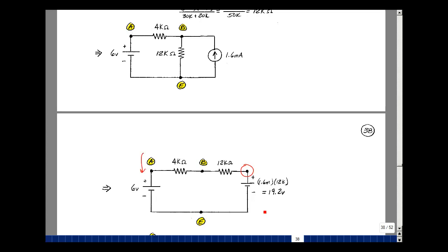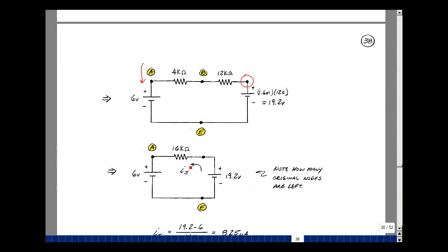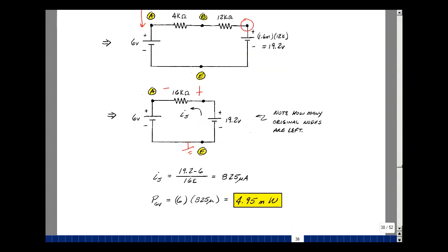I get 16k, and now I can solve for the current in this direction. That would be a drop across here in this direction. If I think of this as a common node or a ground, and this node voltage is 19.2. This is 6 volts, so I take the difference of those two and divide by 16k, and I get 825 microamps, the current flowing into this plus terminal. So the power absorbed by the 6-volt battery is the product of 6 volts and 825 microamps, and that's 4.95 milliwatts. And this is source transformations and an example illustrating it.